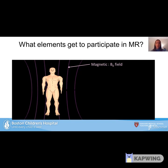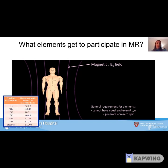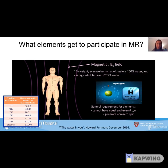What elements get to participate in MR? The general requirement is that they cannot have an equal and even number of protons and neutrons — this generates a non-zero spin. Hydrogen is the most common nucleus used because the human body is made up mostly of water.